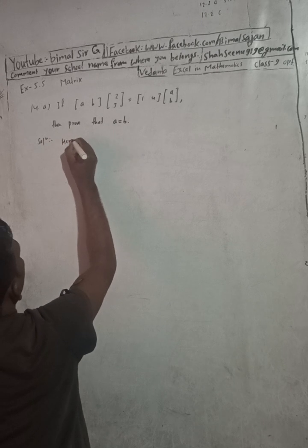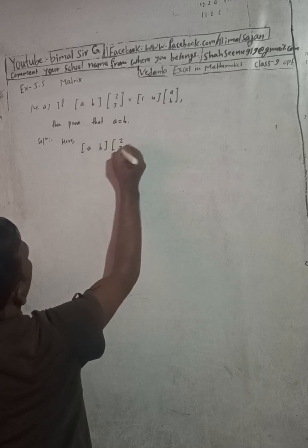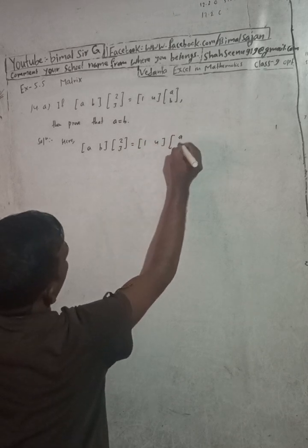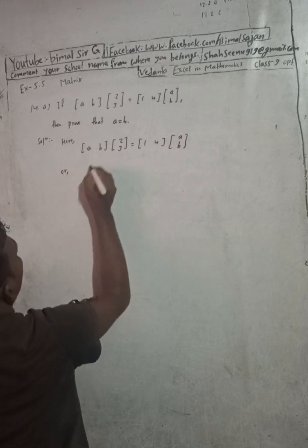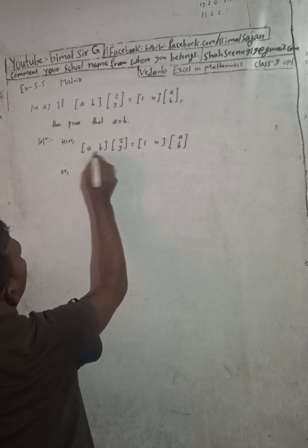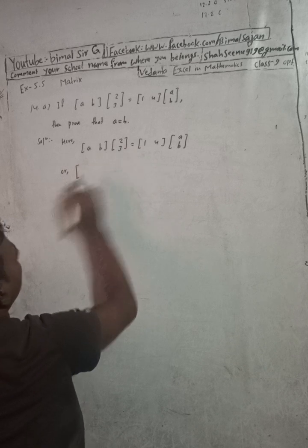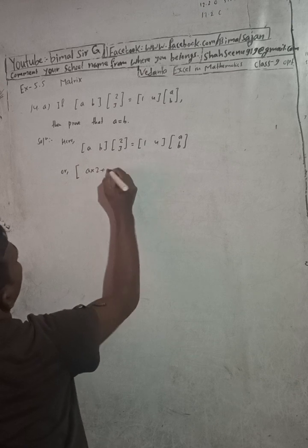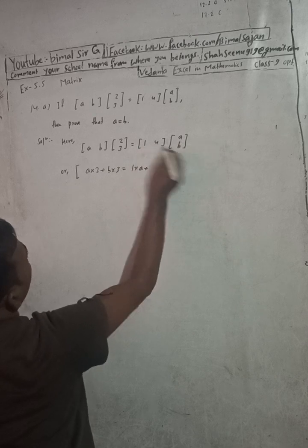So, multiply this row with column. There is no bracket here. We get: a into 2, that is a into 2 plus b into 3, is equal to 1 into a plus 4 into b.